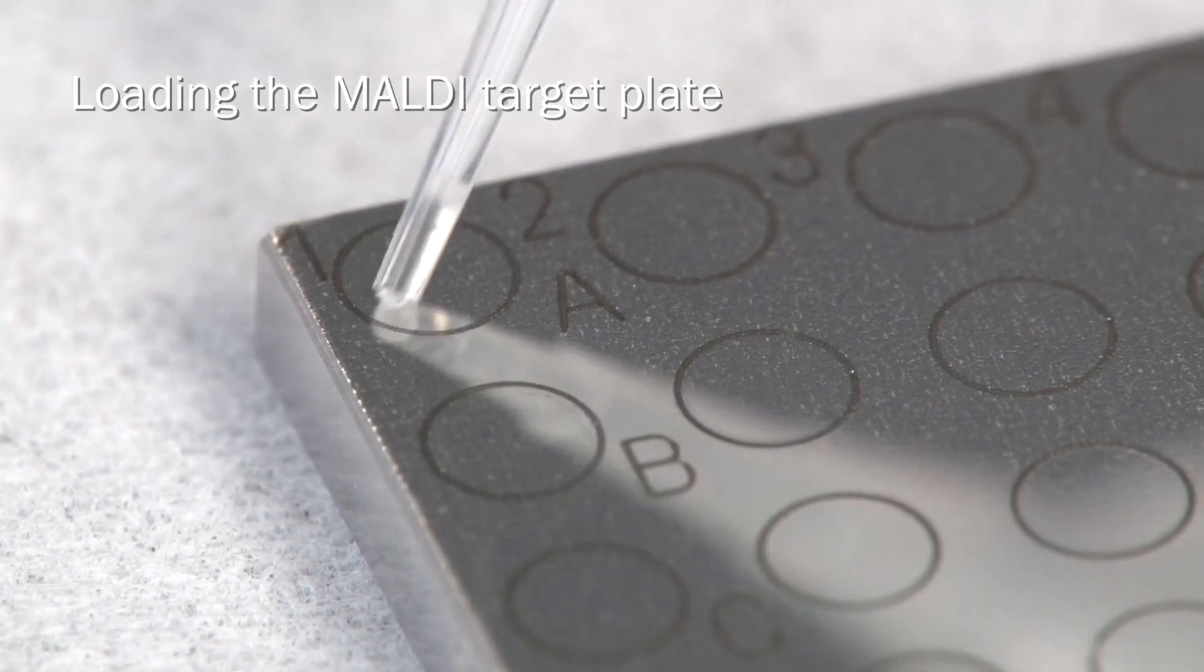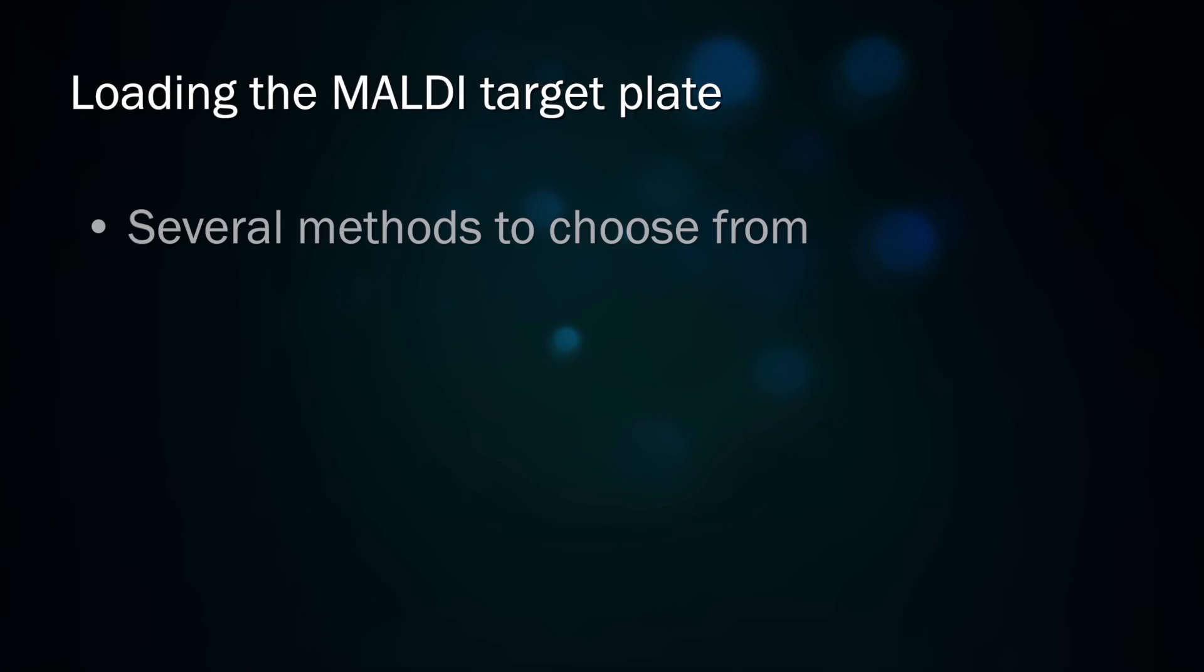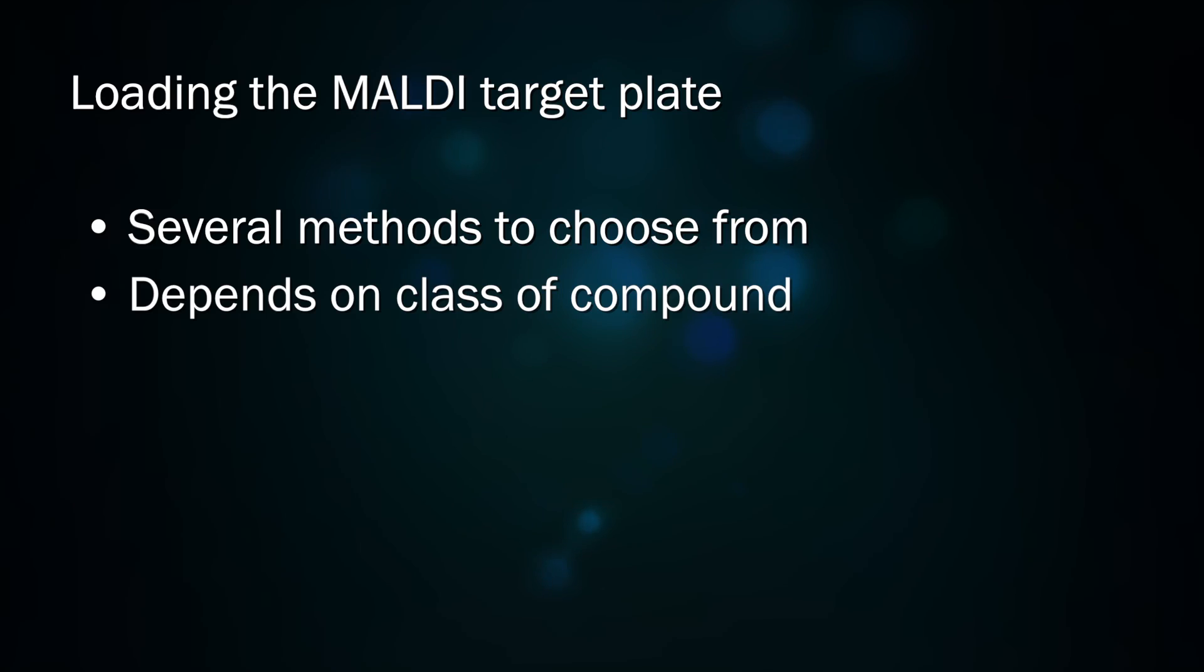When your matrix and analyte solutions are prepared, the sample can be loaded onto the MALDI target plate using a number of different methods. The method you choose will depend on the class of compound, but also different methods can be tried to empirically determine the best method. The original technique for loading a MALDI target plate is known as the dried droplet method.